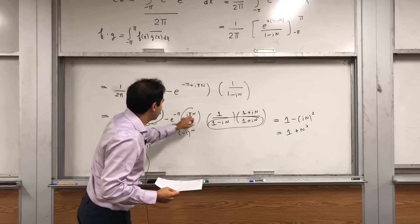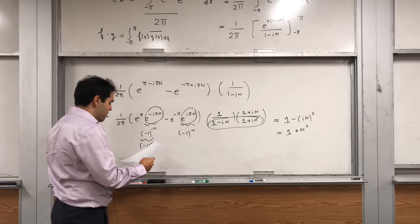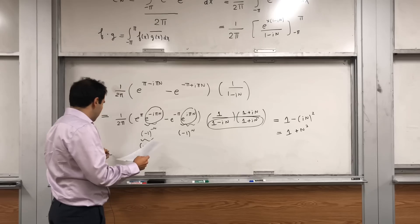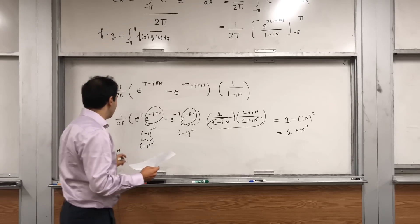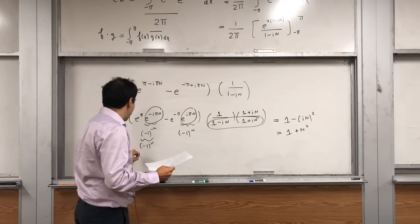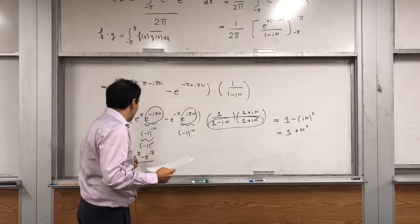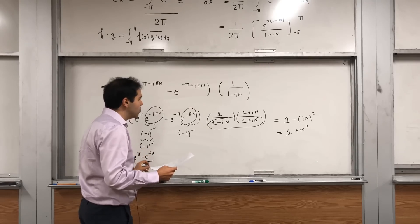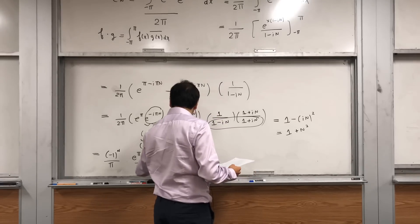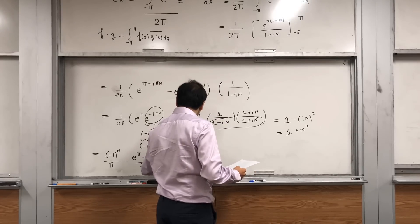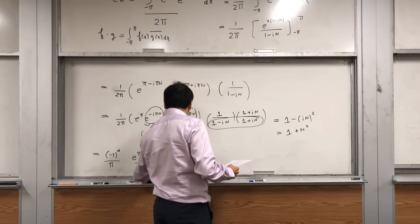You get minus 1 to the n, then e to the pi minus e to the minus pi over 2 — which is sinh of pi — times (1 plus in) over (1 plus n squared).